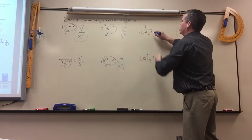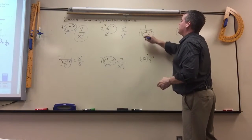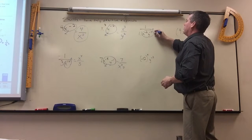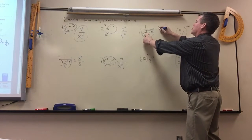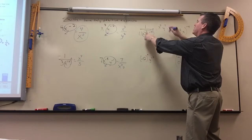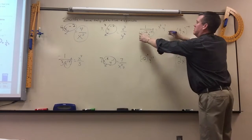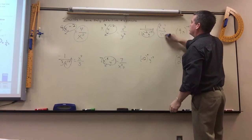Here, the only problem is there are two negative exponents, so you can move them both up. Those would move to the top and change to positive 2 and positive 7. The 11 would just stay where it's at.